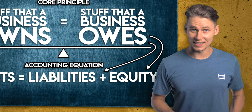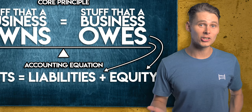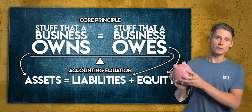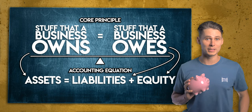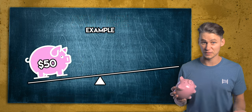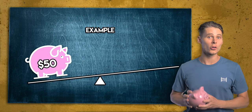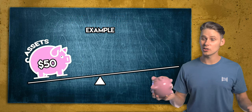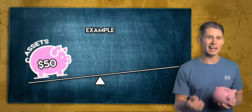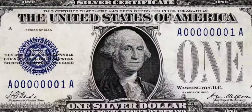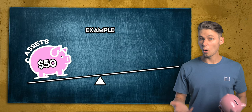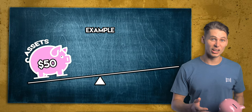What are assets? Imagine that you're the owner of a piggy bank. It's stuffed full of cash and all your prized possessions which have a total value of $50. These are your business's assets — the stuff that it owns. In the real world, assets are things like cash, inventory and equipment: resources that a business uses to operate and generate profit.